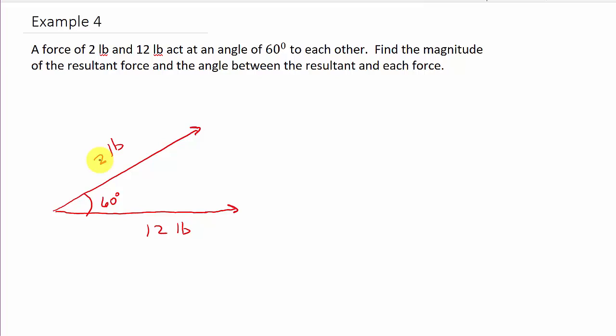So what we want to do is we need to find the magnitude of the resultant force and the angle between the resultant and each force. So first, let's just go ahead and find the magnitude of the resultant. So remember, to get the resultant, we can actually draw a parallelogram. And this is our resultant force. We'll call that vector V.